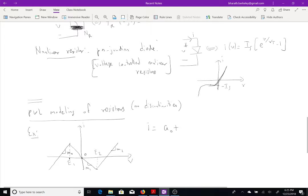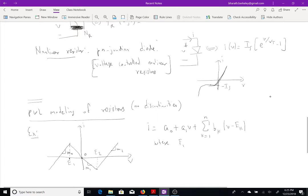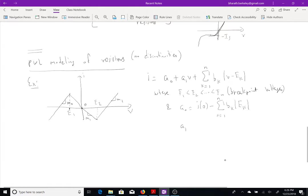I is A0 plus A1V plus sigma k going from 1 to n of Bk, absolute value of V minus Ek, where E1 is less than E2 is dot dot dot less than En, and so, these are the so-called breakpoint voltages.